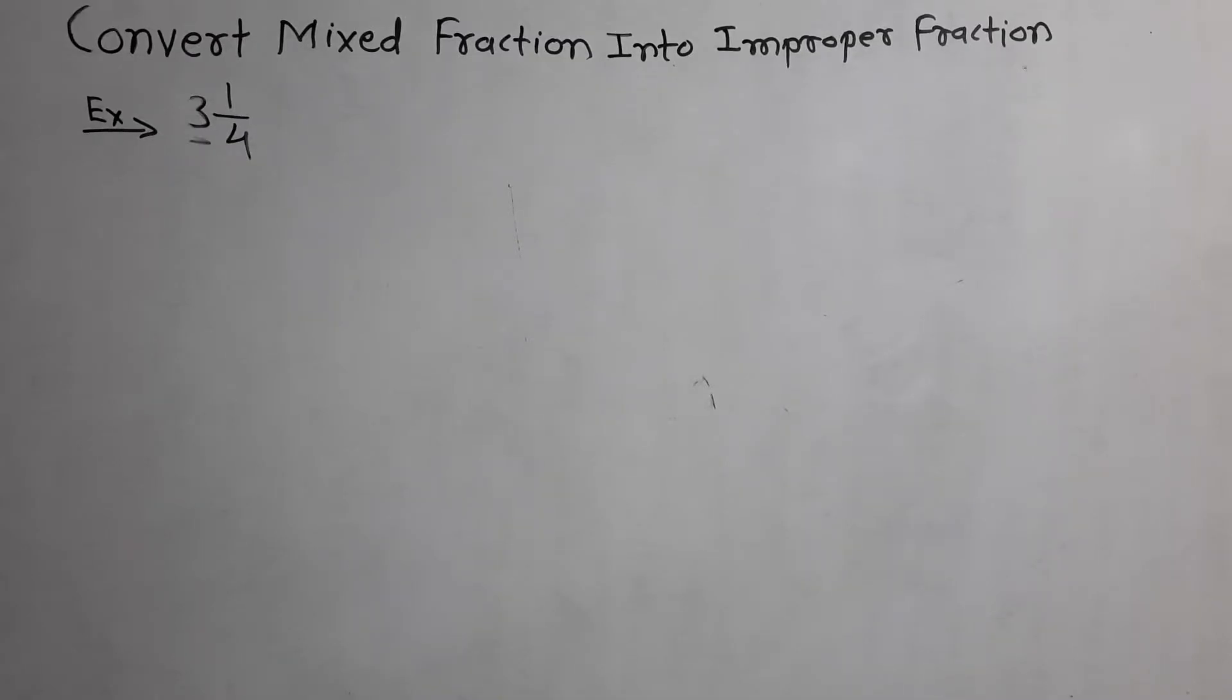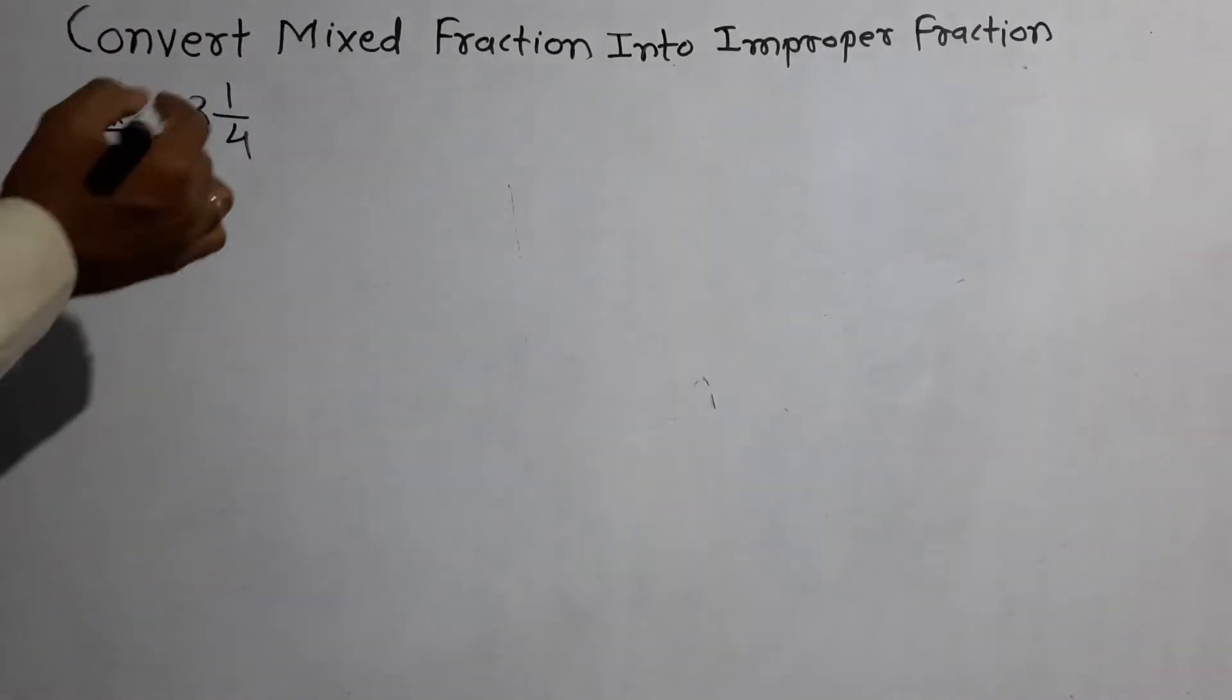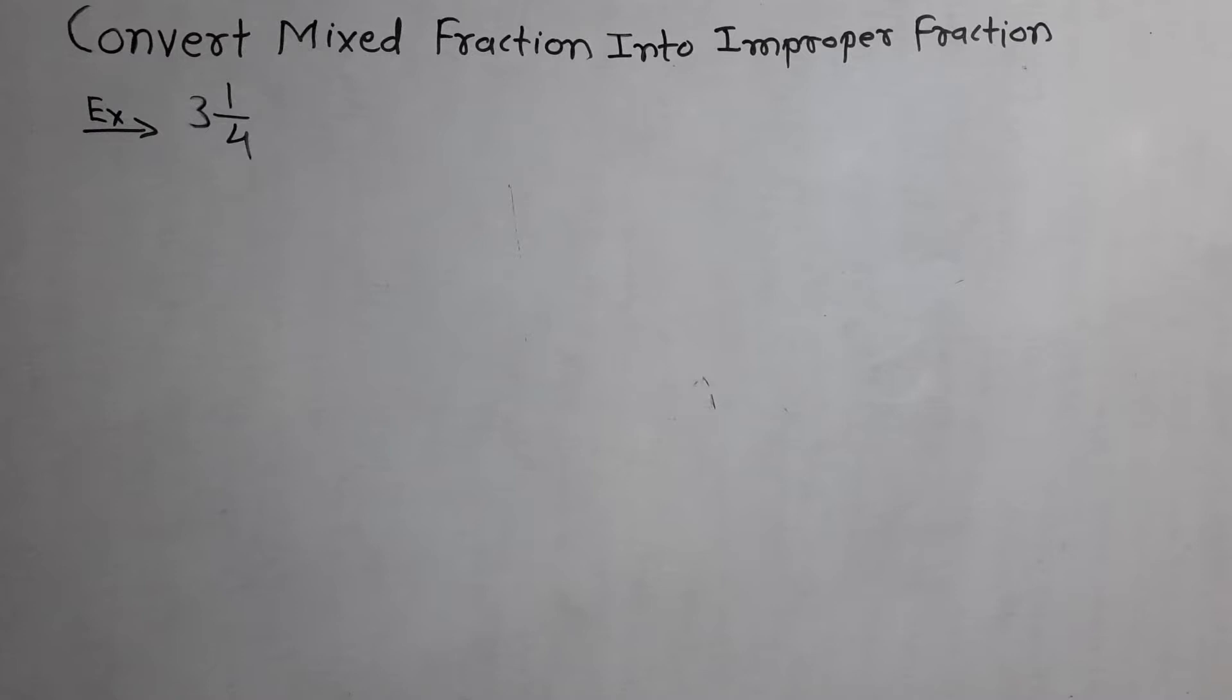Example 3 and 1 by 4. First multiply the whole number, which is 3, with the denominator of the proper fraction. Proper fraction 1 by 4, and add the numerator of the proper fraction. Let us convert 3 and 1 by 4 into an improper fraction.